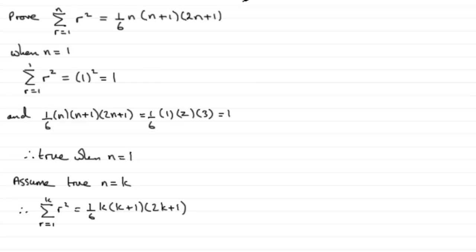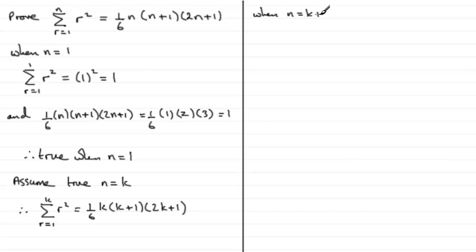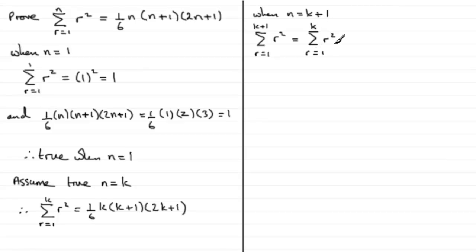Now that we've assumed it's true for some particular value of n, we need to show that it's true — based on this assumption — for n equals k plus 1. When n equals k plus 1, we have the sum of r squared from r equals 1 to k plus 1. This is exactly the same as the sum of r squared from 1 to k, plus the last term — the (k+1)th term — which is simply k plus 1 all squared.